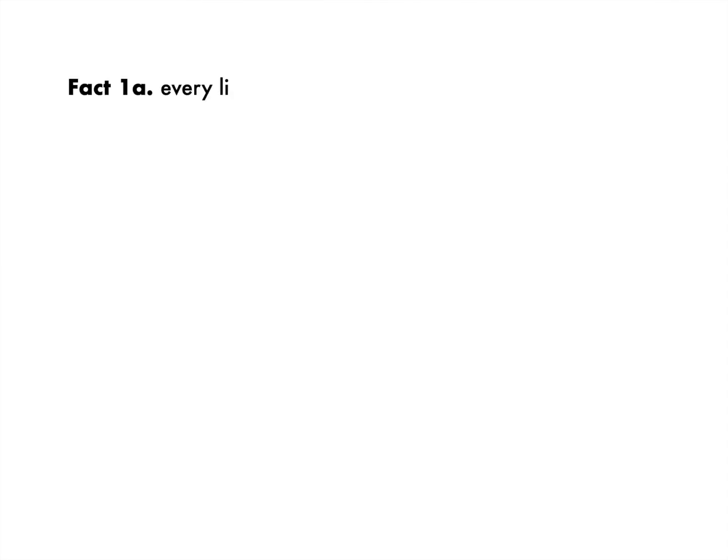The first fact that we get is that every line must have the same number of points. In other words, every card will automatically have the same number of symbols. To see this, let's take two lines and call them L1 and L2. They intersect somewhere and have a common point by rule one.